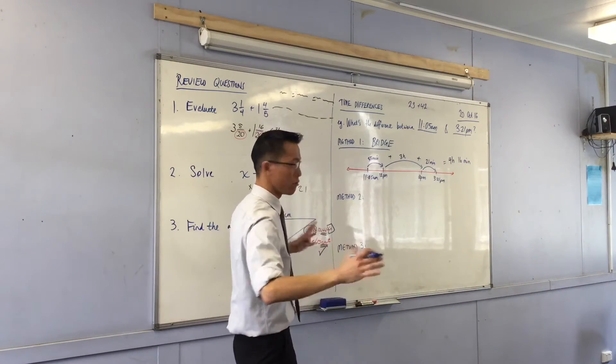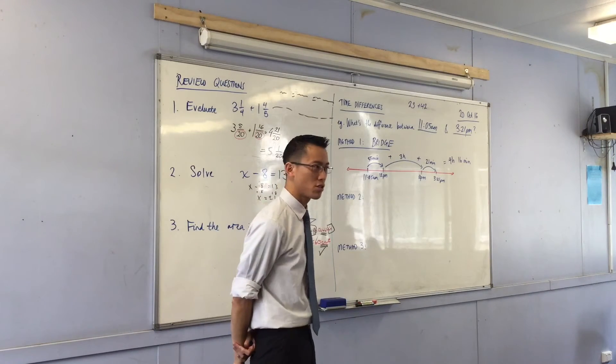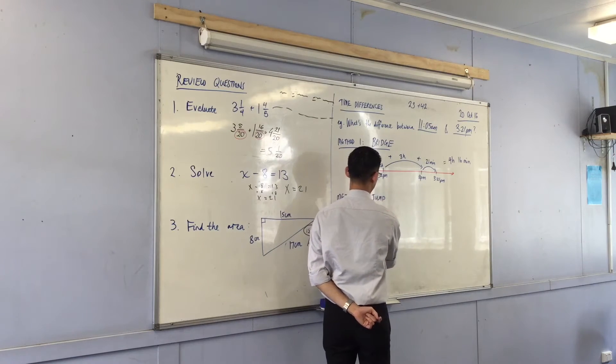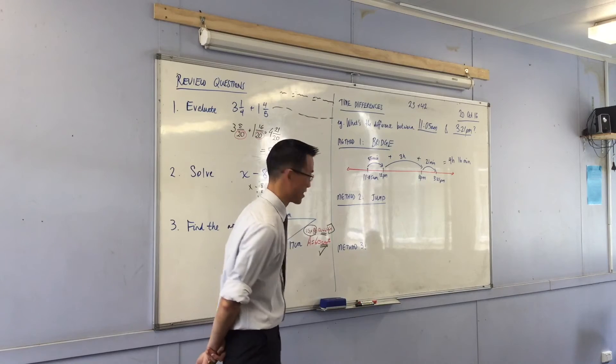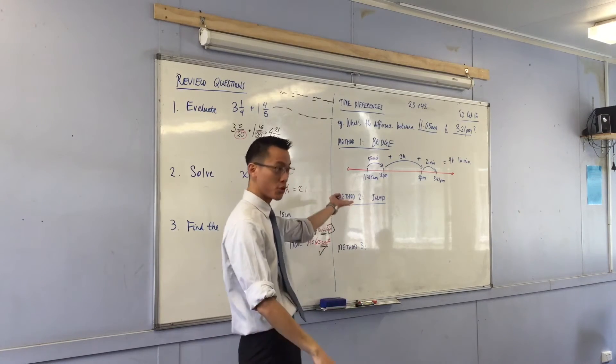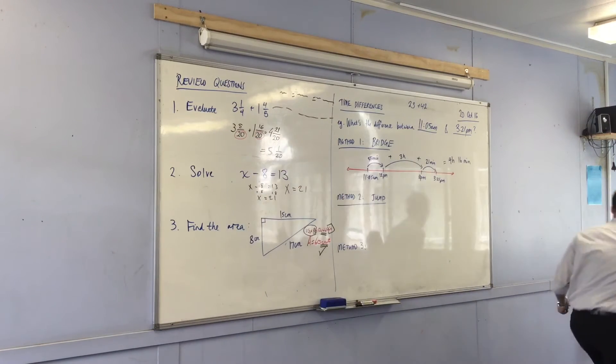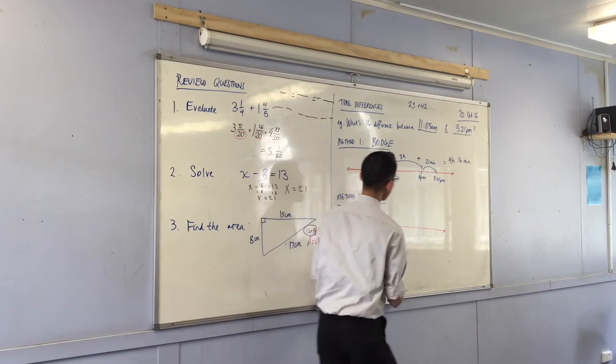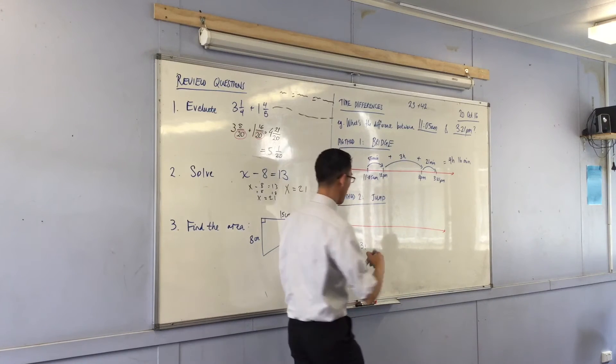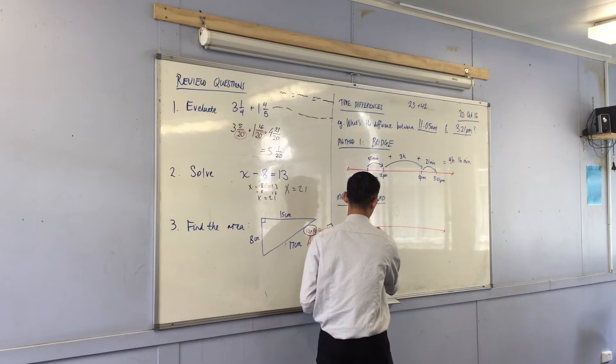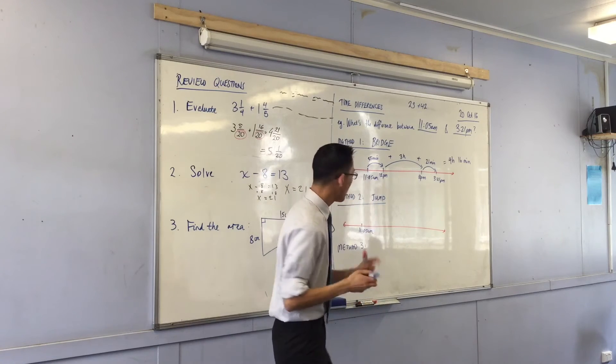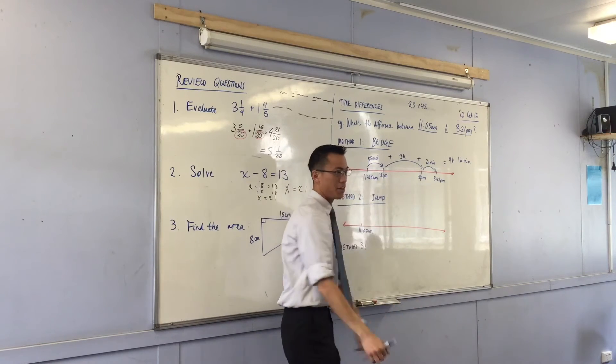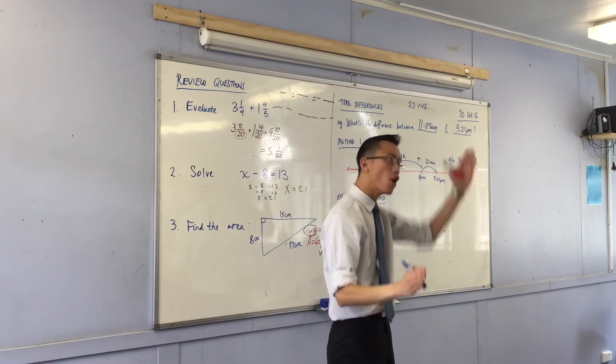So this is one way and maybe you're like, cool, I feel comfortable with that. But sometimes you can do it differently and it might be simpler. For example, method two. I hope the same number of people who recognize the bridging strategy will recognize the jump strategy. Draw another timeline for me. Again, we're going to start from 11:05. But instead of bridging up to the closest hour, then counting from there, I'm just going to jump the biggest number of hours I can so long as I don't overshoot.